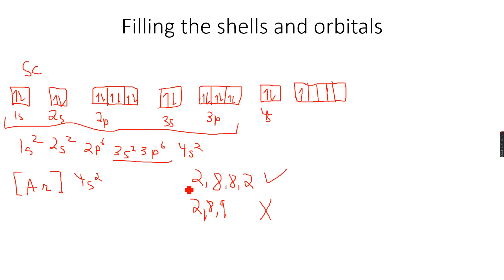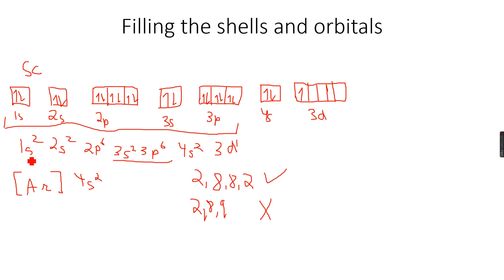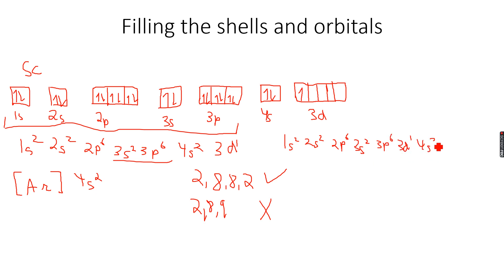This will become 4s2 and 3d1. So even though 3d fills after the 4s, we will always have to write the 3d before the 4s. We fill 3d after 4s, but when writing the configuration we write it in order of 1, 2, 3, and 4. So the electronic configuration is written as 1s2 2s2 2p6 3s2 3p6 3d1 4s2.